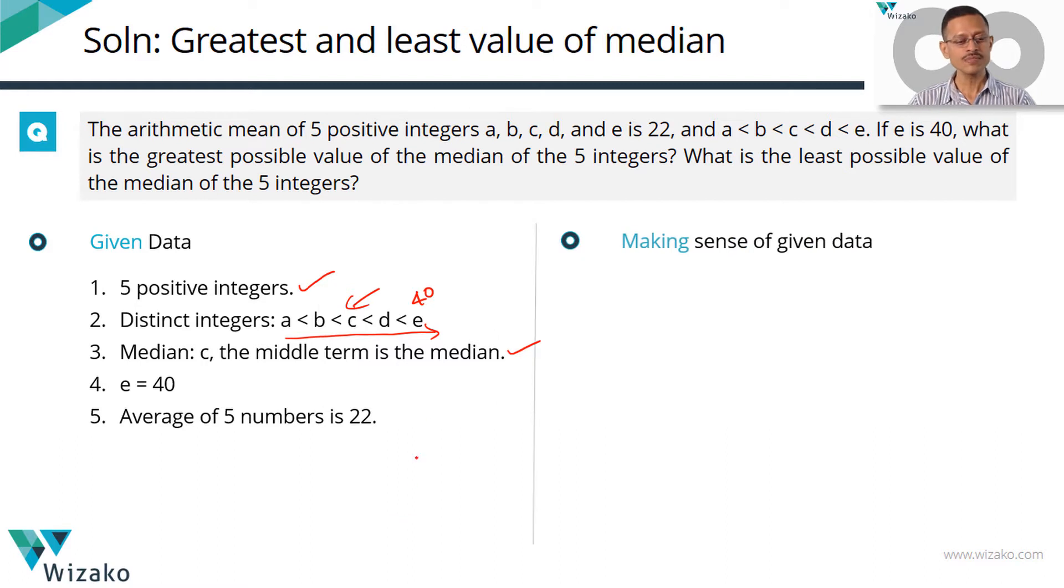Let's make sense of this data. We know that the average of these five numbers is 22. So the sum of these five numbers, which is A plus B plus C plus D plus E, will be 5 times 22, which is equal to 110. The largest number is 40. So let's replace E with 40. So the equation basically boils down to A plus B plus C plus D is equal to 110 minus 40, which is 70. This is going to be our starting point to find both these things: to find the greatest value of C, which is the median, and to find the least value of C.